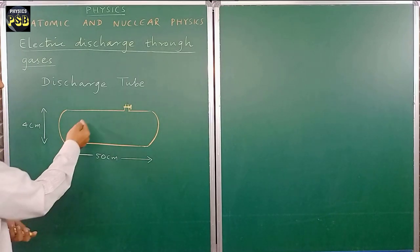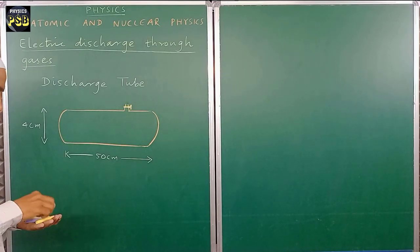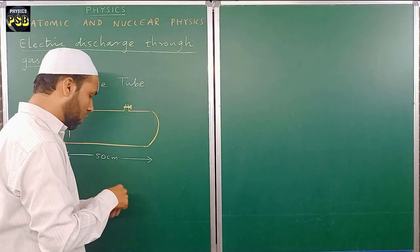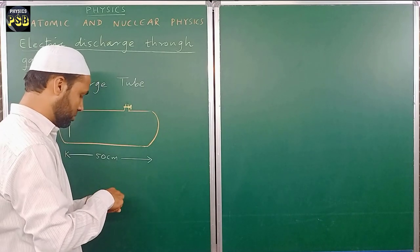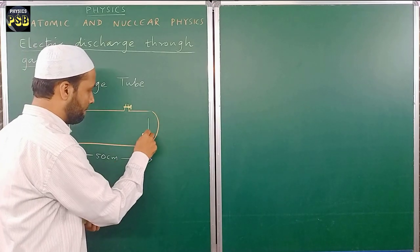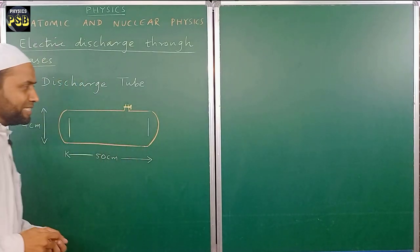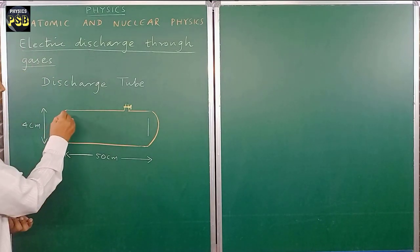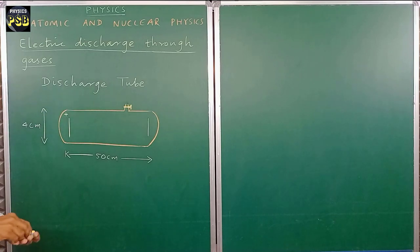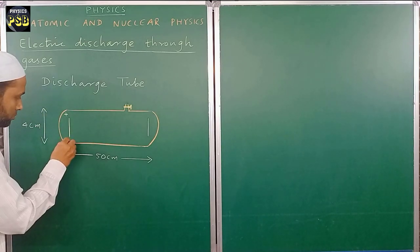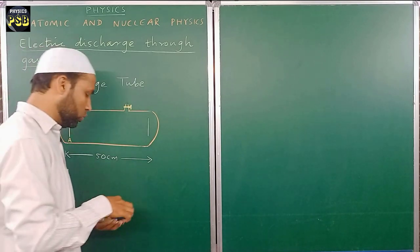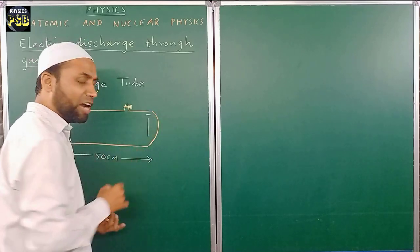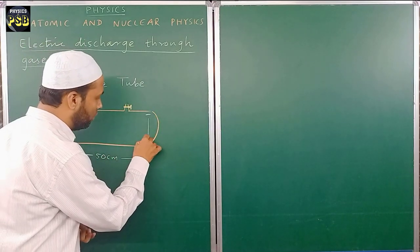The tube has two metal discs kept inside — one metal disc at each end of the tube. These two metal discs are called electrodes. The electrode connected to the positive terminal of the power supply is referred to as the anode, and the electrode connected to the negative terminal is referred to as the cathode.